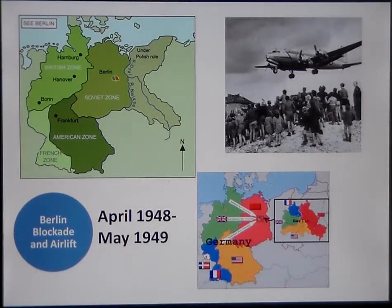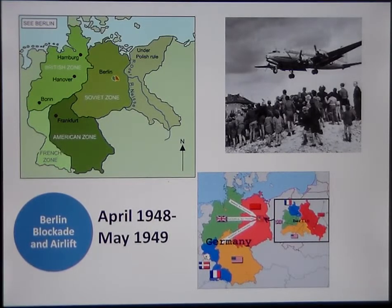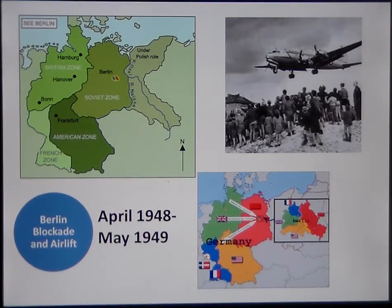On the diagram, top right you can see the planes coming in for the airlift. Top left, you can see the four zones of Germany as a whole and the red and blue dots where Berlin is. Bottom right, you can see the air corridors.